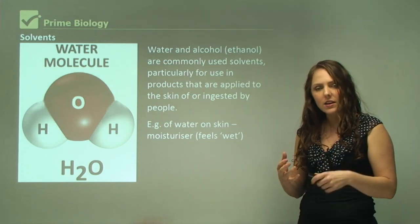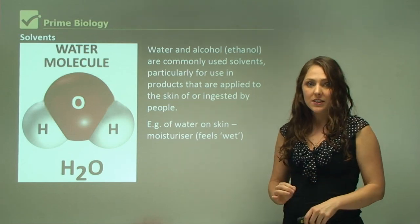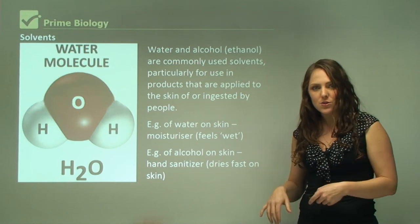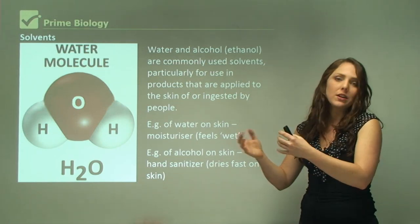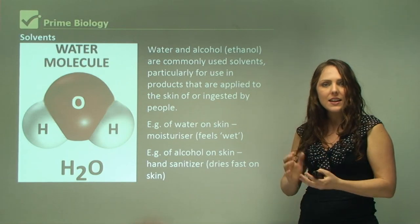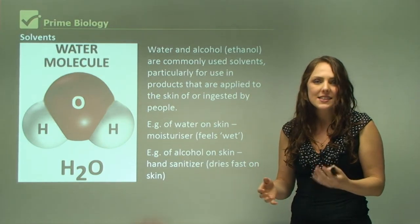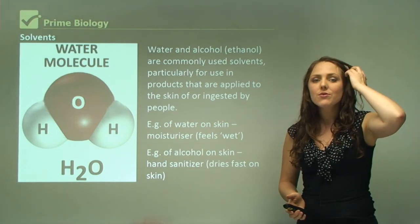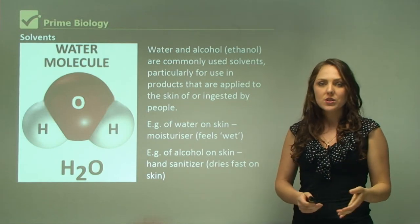When you put moisturizer on it might be left and when it's left it kind of feels wet. For that reason we actually know the base of that moisturizer is water. An example of an alcohol as a solvent is sanitizer. When you get a hand sanitizer and you rub it on your skin you don't need water and it's a cleaning mechanism, but within 20 seconds the alcohol is actually dried off. If it dries really fast that's how we know that it's alcohol as a solvent instead of water.